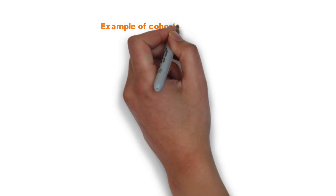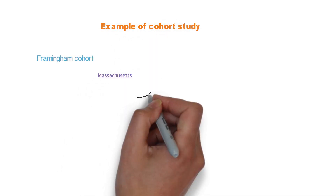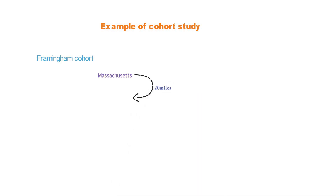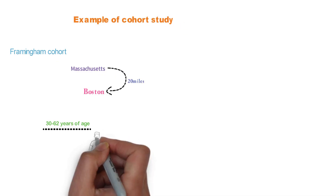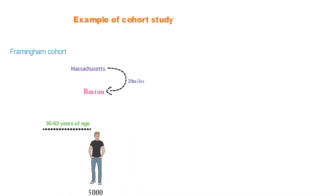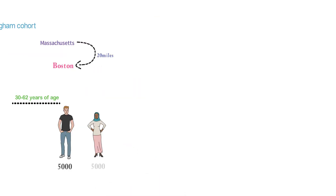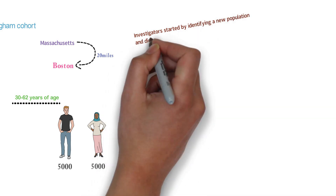Example of cohort study: the Framingham cohort study. Framingham is a town in Massachusetts, about 20 miles from Boston. Residents were considered eligible if they were between 30 to 62 years of age, with a sample size of about 5,000 men and women. The study started with a defined population; investigators started by identifying a new population and did not use existing data.